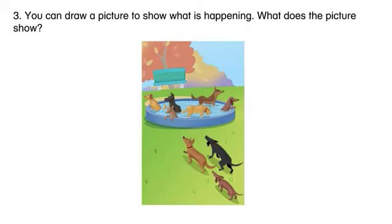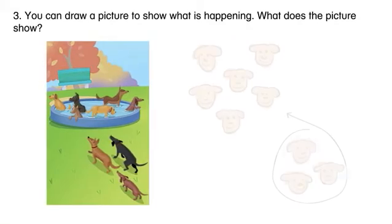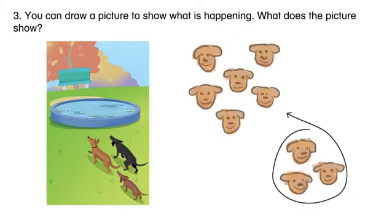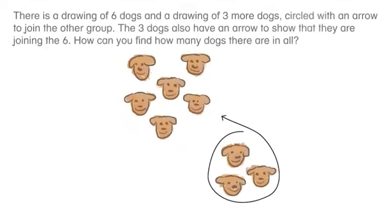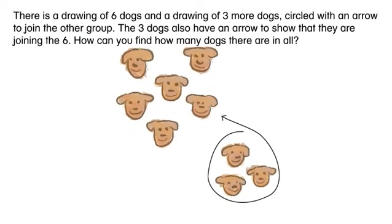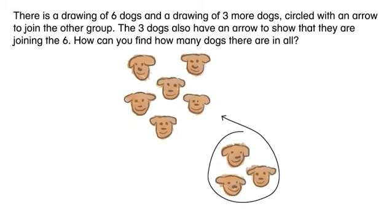You can draw a picture to show what is happening. What does the picture show? There is a drawing of six dogs and a drawing of three more dogs, circled with an arrow to join the other group. The three dogs also have an arrow to show that they are joining the six.